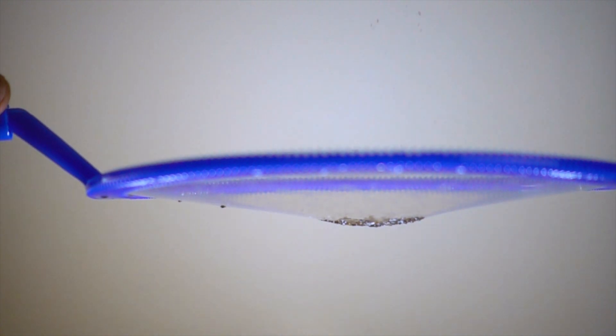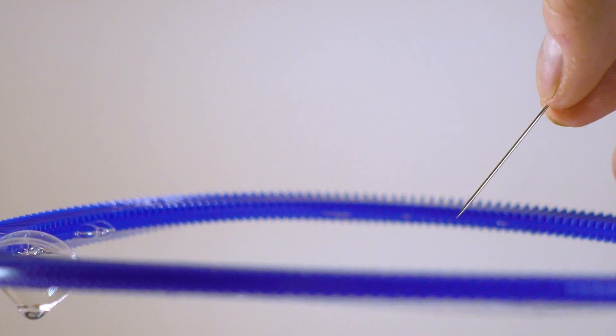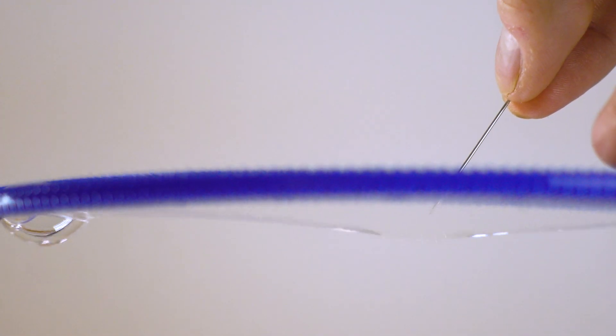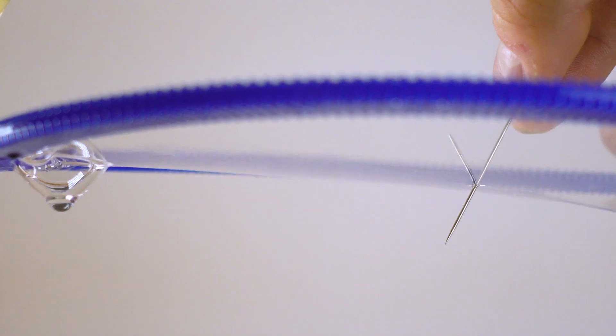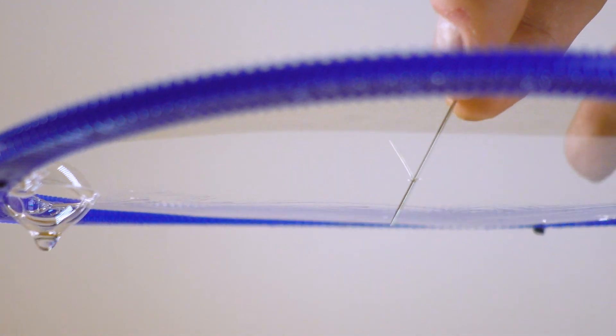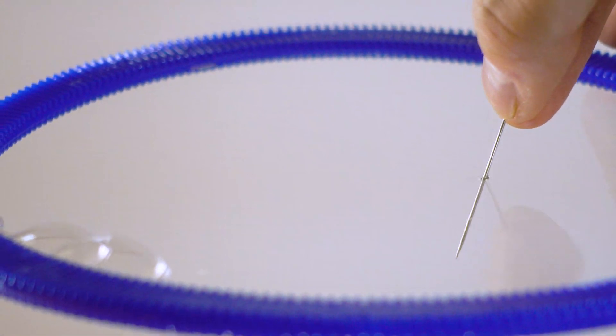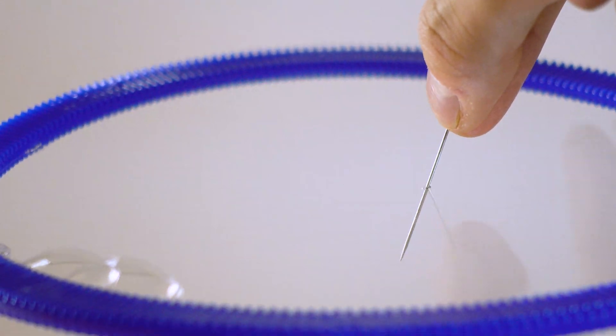We usually think of a soap film as quite fragile. From our experience, if we use a sharp object to poke the soap film, it is likely to break. But under certain conditions, this is not necessarily true. Here, I was able to successfully pass a sharp sewing needle through the membrane without rupturing it. As I pull the needle back out, the membrane naturally self-heals.